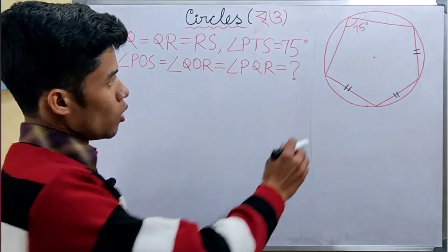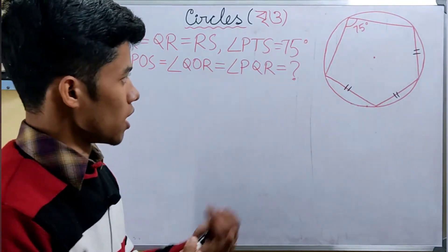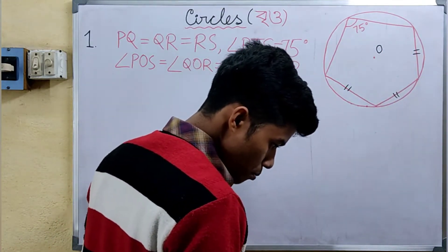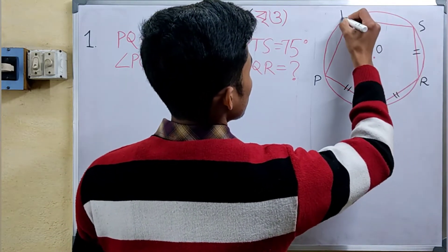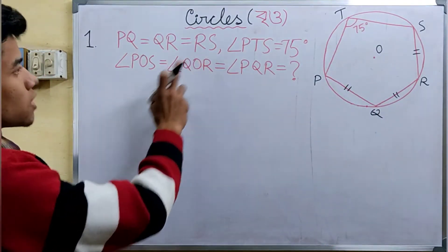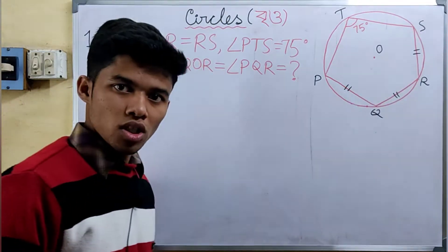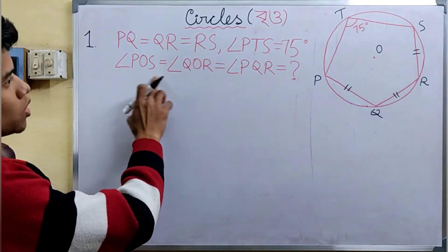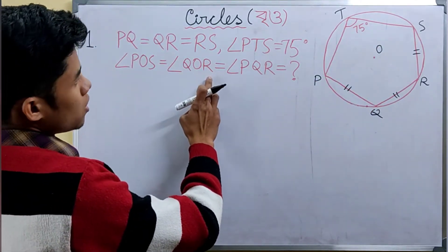Today we are going to discuss the first diagram. Here we have a circular center with points PQRST, where the cyclic polygon is named PQRS and the fifth point is T. We are given that PQ equal to QR equal to RS, each equal to arc A, and A is 75 degrees. The question asks for angle POS.